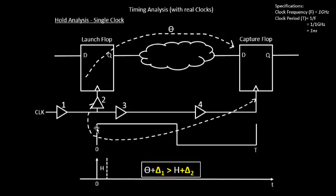This particular clock edge, once it reaches the capture flop, takes around three buffer delays, and that is captured as delta2. The rest of the equations remain the same. If you remove delta1 and delta2 — for example, if delta1 and delta2 are equal — the equation still remains the same: basically, your combinational delay should be greater than the hold time.